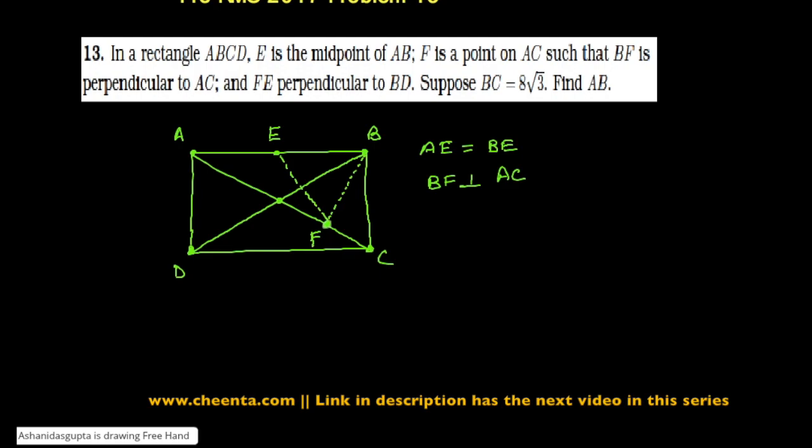this will be a 90 degree as well. So EF or FE is perpendicular to BD. All of this is given. And we also know the length of BC - it's 8 square root of 3.